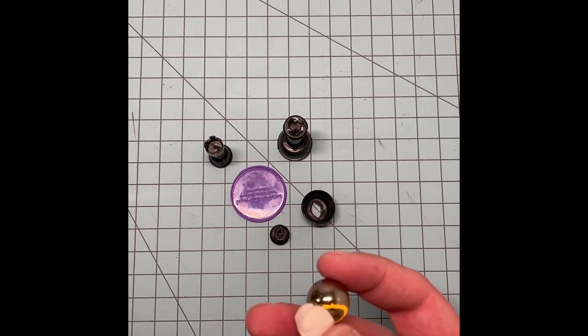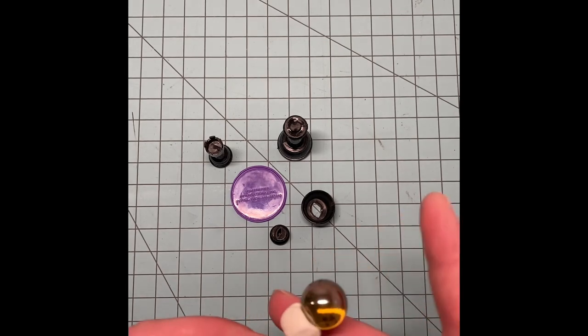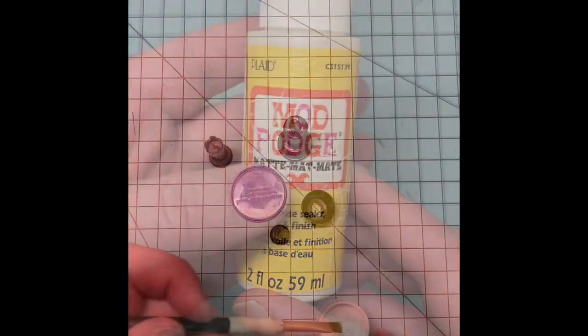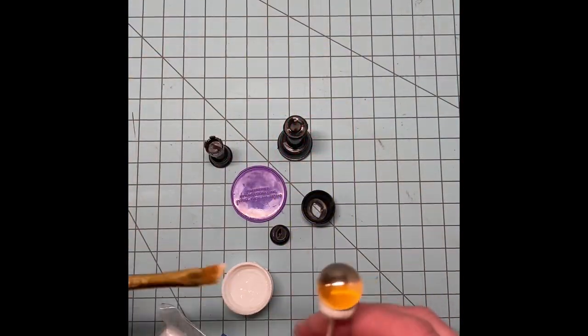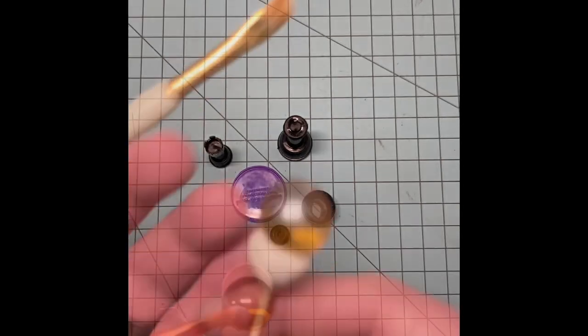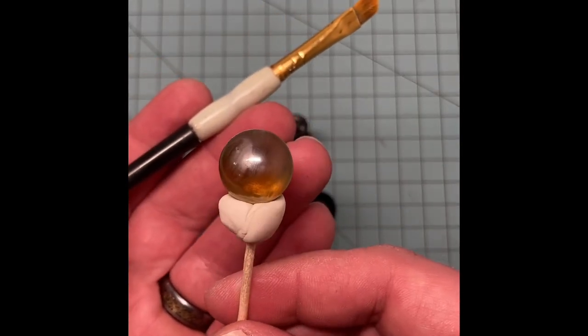Now you're going to see here I use some poster tack putty and a toothpick. I use these to hold the pieces so I can paint them with two thin coats of mod podge, allowing the pieces to dry between coats. The mod podge will ultimately help the paint stick to the glass and the plastic.